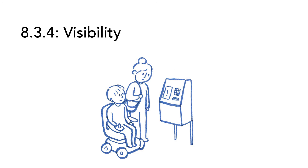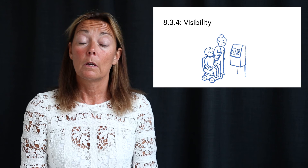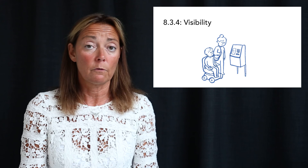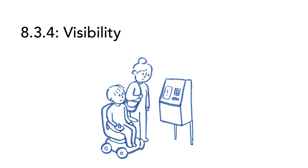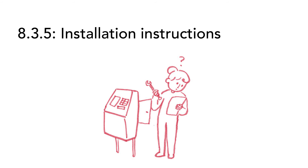The next part of this subsection has to do with visibility. For users in a wheelchair, it is essential that information on the screen is readable from the angle where you sit. This requirement says that the screen must be readable from a point 1015 mm or 40 inches above the center of the floor of the operating area, which is defined in 8.3.2.2. Section 8.3.5 covers installation instructions. If the ICT has installation instructions, these must include the requirements from 8.3.2 up to 8.3.4, covering speech output, physical access, and mechanically operable parts.